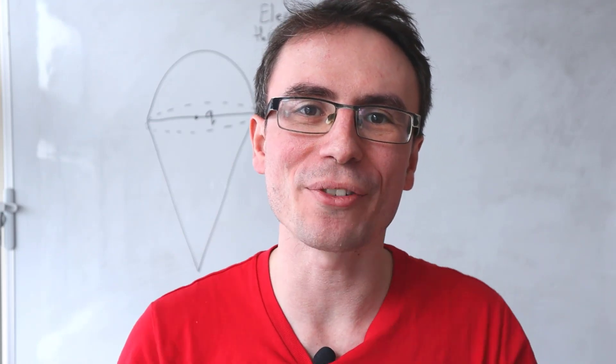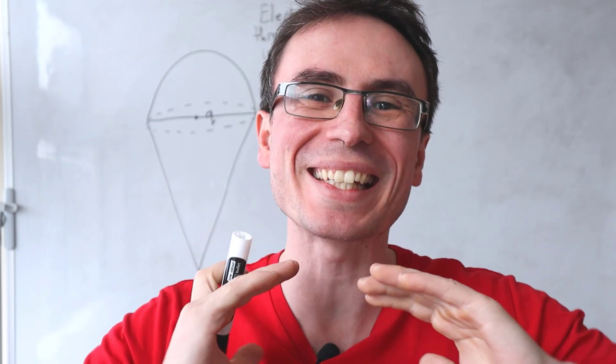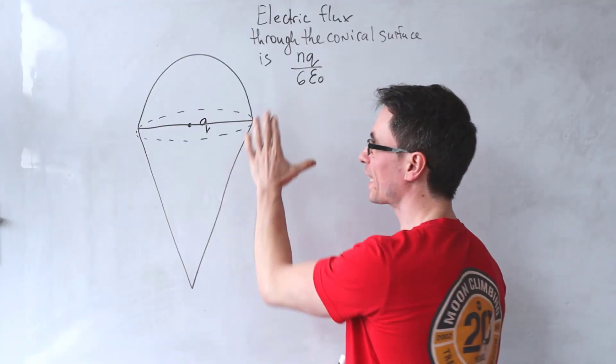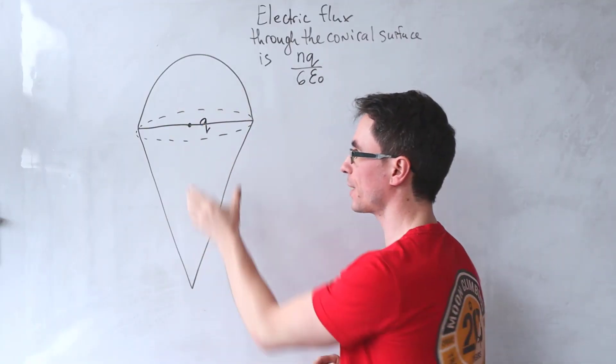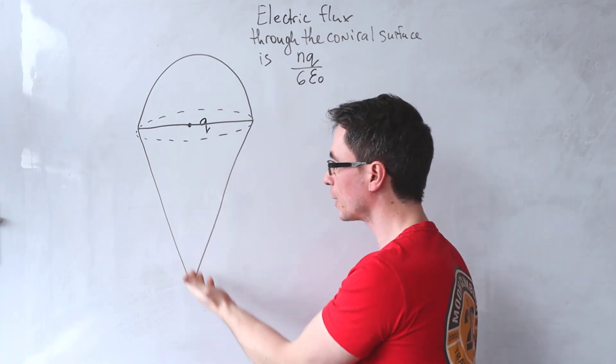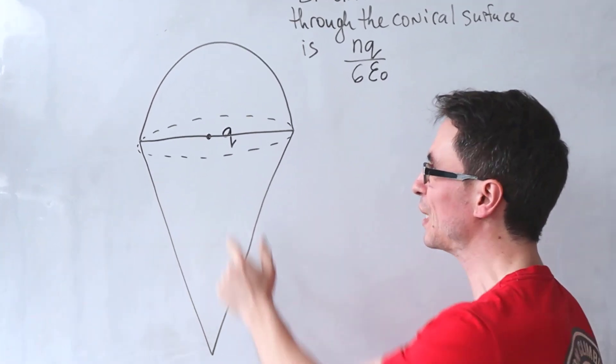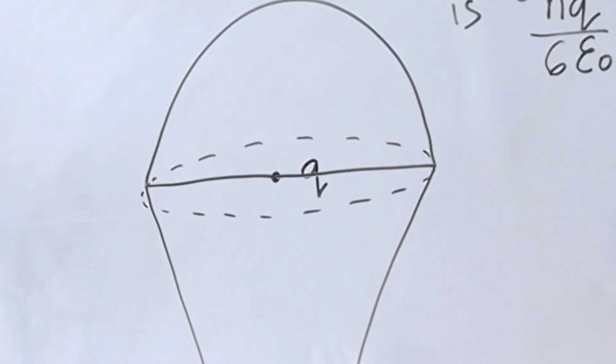Let me show you a JEE advanced problem that is solved almost entirely by symmetry. We're given this closed surface that consists of a hemisphere and then a conical shape just underneath it. There's a charge Q right at the center of it.